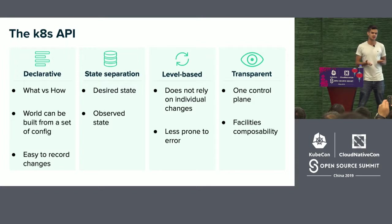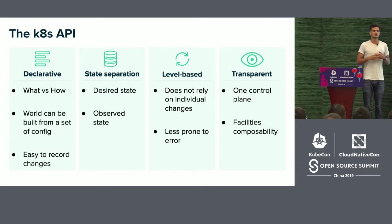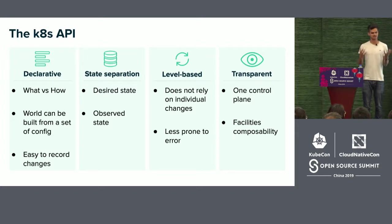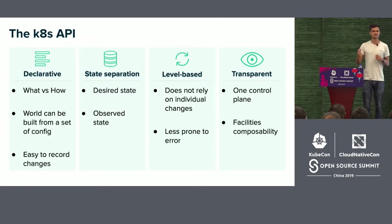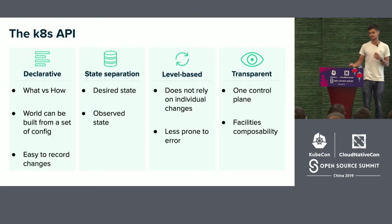The Kubernetes API is also transparent by default. Writing resources to the API, you have a single control plane for everything. Permission allowing, all your components can access resources from other components, allowing for composability between teams. Controllers can watch other teams' resources and extend the functionality.